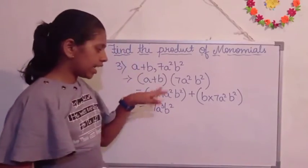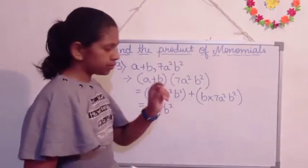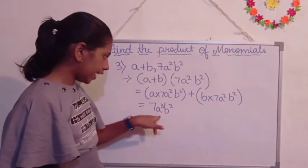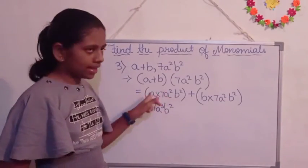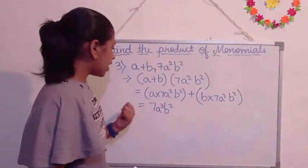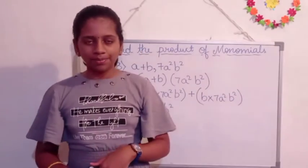Why? Because there are three A's and then two B's as it is. So 7 into A, 7A, and then here 3 A's are there. 7A square and then A. So 7A cube B square.